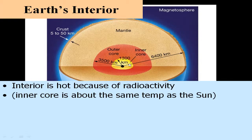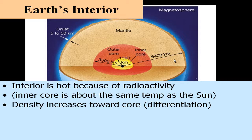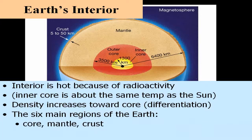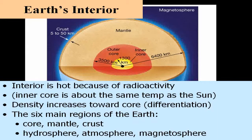The inner core of the Earth is actually the same temperature as the surface of the Sun — about 6,000 degrees Kelvin. Density of the Earth increases towards the core, a direct result of differentiation as material coalesces and accretes — denser stuff towards the middle, less dense stuff towards the outer portions. The six main regions of the Earth, going from the solid portion outward, are: the core, the mantle, and then the crust — real thin, up to about 30 miles. Continuing outward: the hydrosphere, the atmosphere containing gases including the ozone layer, and the magnetosphere. Core, mantle, crust, hydrosphere, atmosphere, magnetosphere.